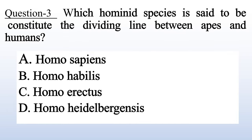Question 7: Which hominid species is said to constitute the dividing line between apes and humans? A. Homo sapiens, B. Homo habilis, C. Homo erectus, D. Homo heidelbergensis. Answer is C: Homo erectus.